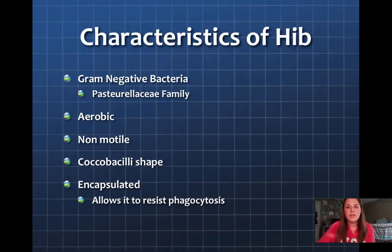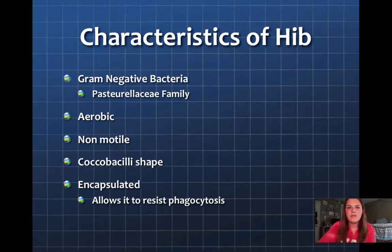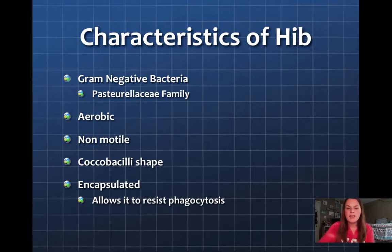Some basic characteristics of HIV: it is a gram-negative bacteria belonging to the Pasteurellaceae family. It's aerobic, non-motile, and pleomorphic coccobacillate-shaped. Because it's pleomorphic, it can change its size depending on each different type. Most importantly, it is encapsulated, and this characteristic allows it to resist phagocytosis when invading.